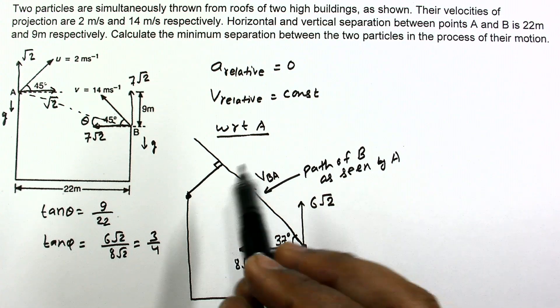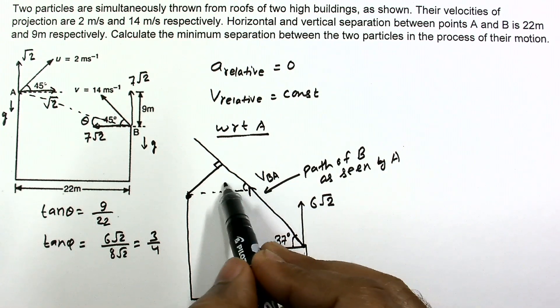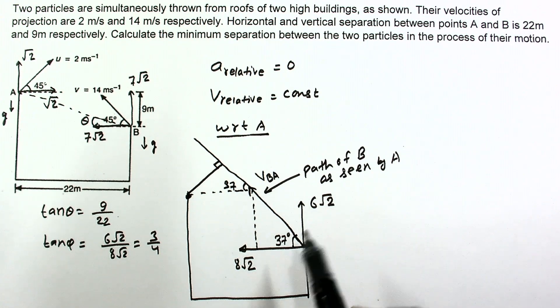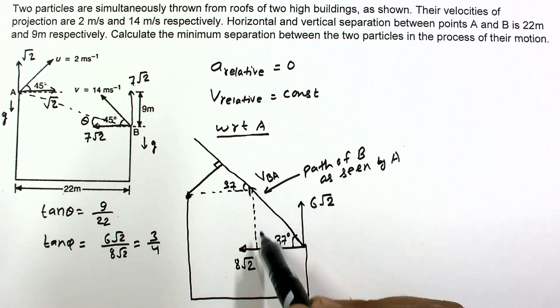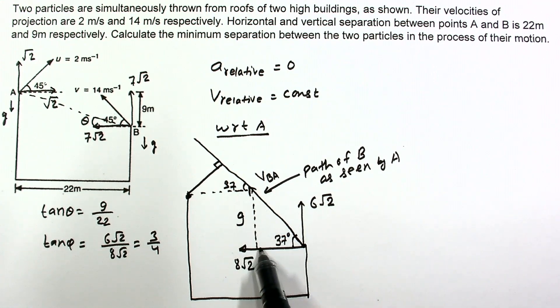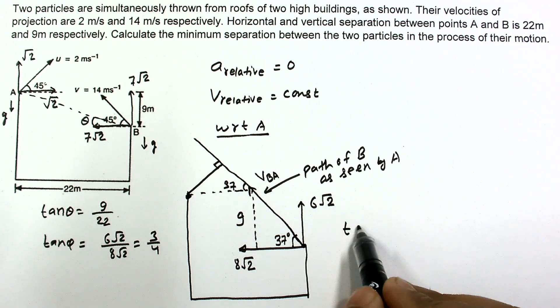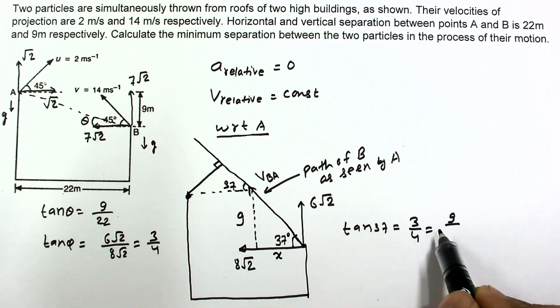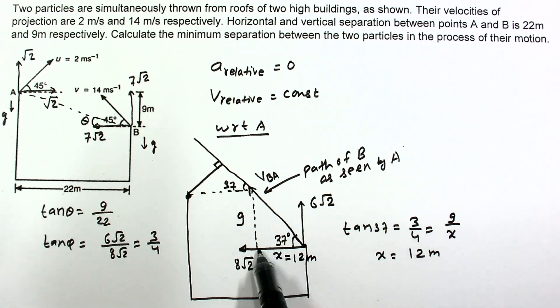If we calculate this perpendicular distance, then that will be the minimum distance. Let us draw this: this angle is 37 and this angle is also 37. From geometry, we are given that this vertical height is 9. So in this triangle we can find this distance. Tan 37 equals 3 by 4, and this is equal to 9 divided by x. This x will be equal to 12.